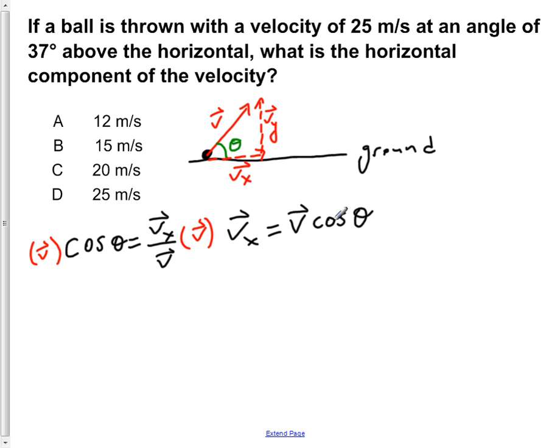So vx is equal to 25 meters per second, because we're told that the velocity is 25 meters per second as shown here, and it's cos of theta. Theta is 37 degrees.